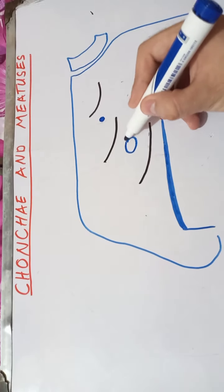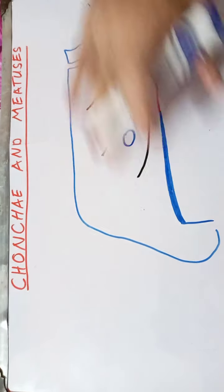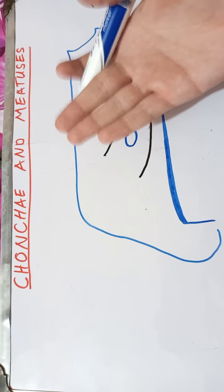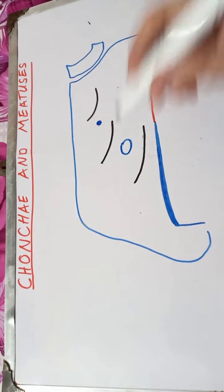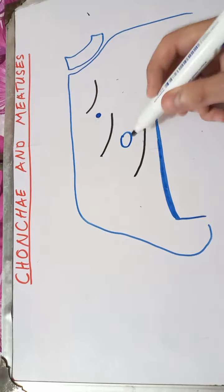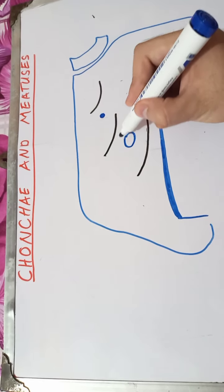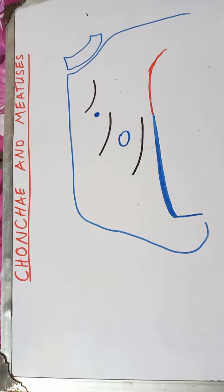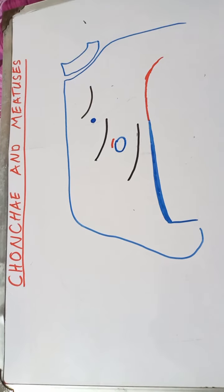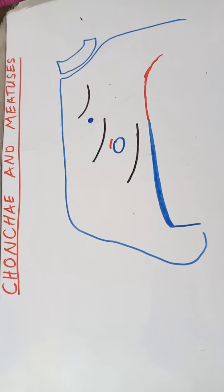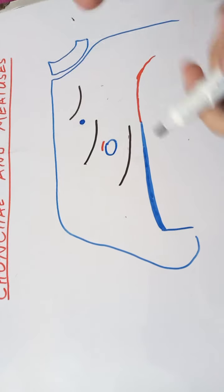In the middle meatus there is a rounded elevation called the ethmoidal bulla. Since this is the lateral wall, the elevation is directed toward the medial side. At the superior end of the ethmoidal bulla there is the opening of the middle ethmoidal sinus.